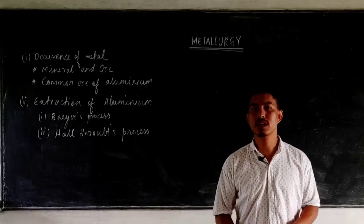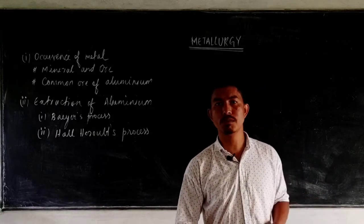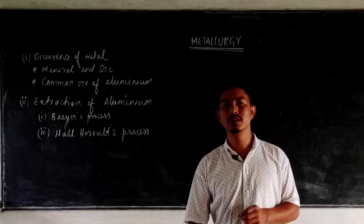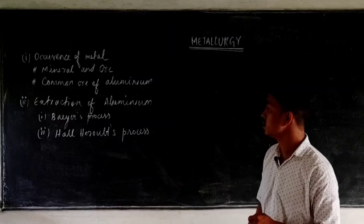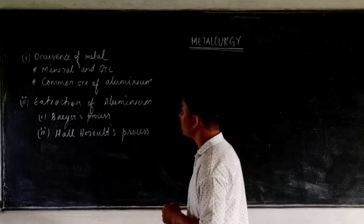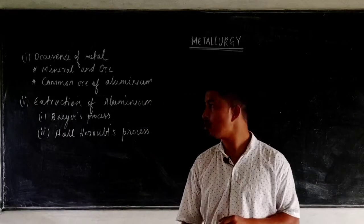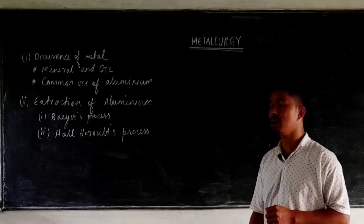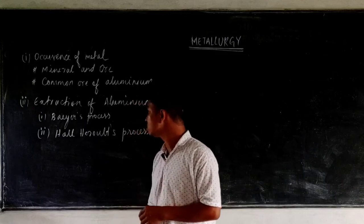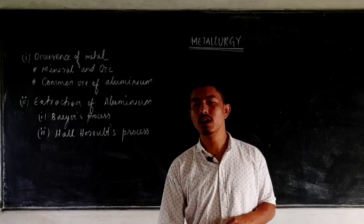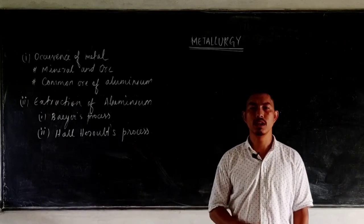In your book you will find a vast description of all the processes and methods by which the metal is extracted from the minerals. But in this reduced syllabus we have very few things to study, as I have mentioned on the board. First we will be discussing the occurrence of metal, where we learn about minerals and ores and the common ores of aluminium. Secondly, we will learn the extraction of aluminium involving two processes: the Bayer's process and the Hall-Héroult's process.